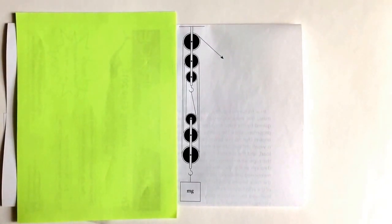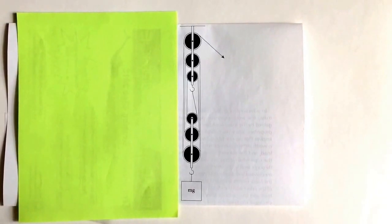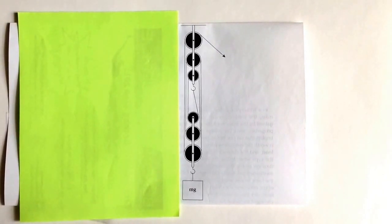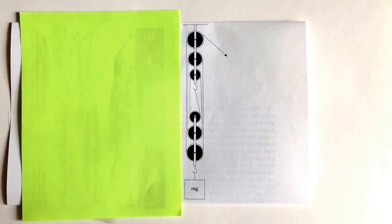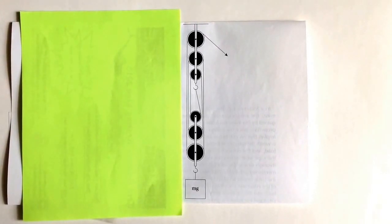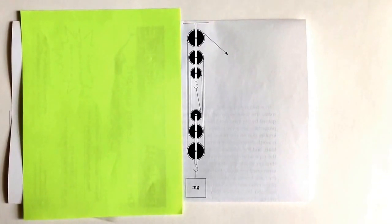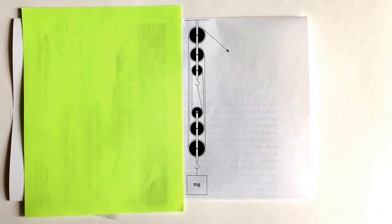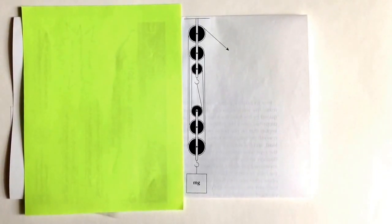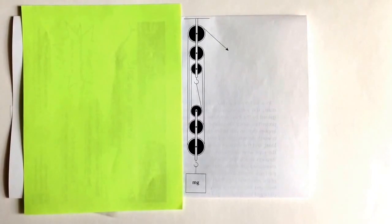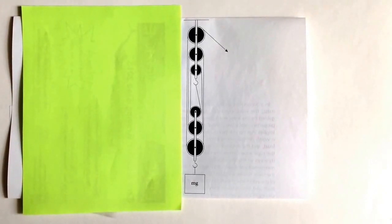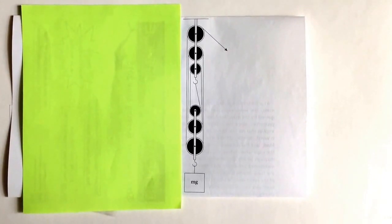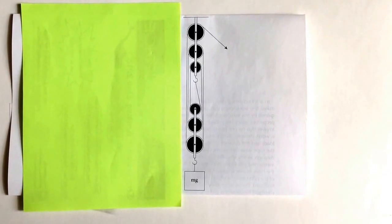So as the load goes up 4 meters, there are 6 strands that each move up 4 meters. So the total rope that moves up is 4 times 6, or 24 meters. And this is the length of the rope that would have to be pulled at the effort end. So as the load goes up 4 meters, 24 meters of rope would have to be pulled at the other end.